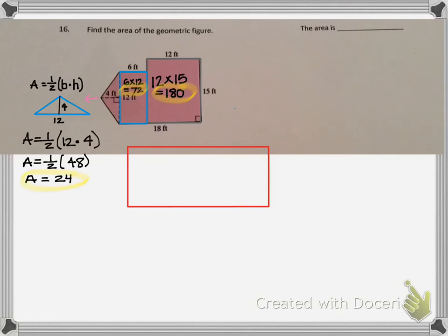Our total area for the whole composite figure is the sum of 24 plus 72 plus 180. Our total area is 276 square feet.